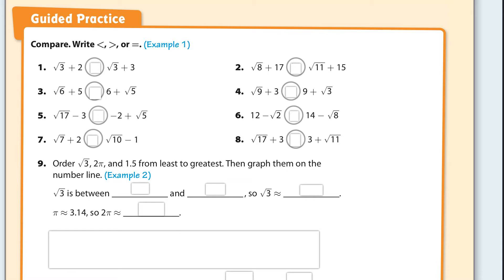The first one is number one, and what we have is the square root of three plus two, and then the square root of three plus three. Well, I don't know what the square root of three is, but if you add two to it, it's not going to be as much as adding three to it. So I believe that the right one would be the answer. Yeah, it's open to the right.